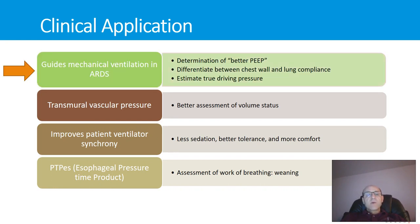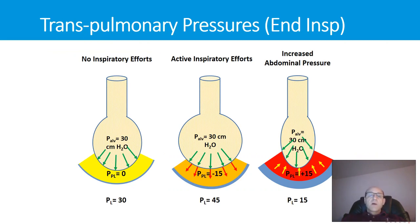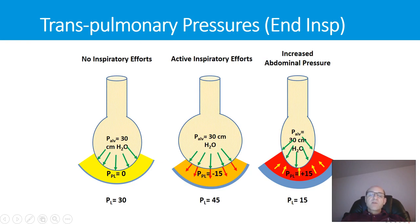In ARDS patients, consider three different scenarios with the same plateau pressure of 30 cmH₂O. In a passive patient with zero pleural pressure, transpulmonary pressure equals 30. In a spontaneously breathing patient generating minus 15 pleural pressure, transpulmonary pressure is 30 minus (minus 15) equals 45, resulting in a larger tidal volume in pressure control mode. In a patient with increased abdominal pressure transmitting a pleural pressure of 15, the same airway pressure gives only 30 minus 15 equals 15 cmH₂O transpulmonary pressure and a lower tidal volume.